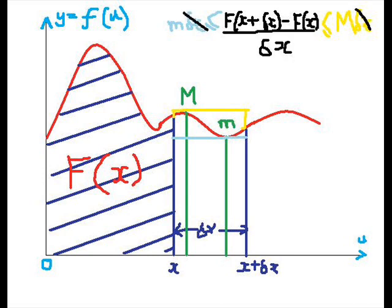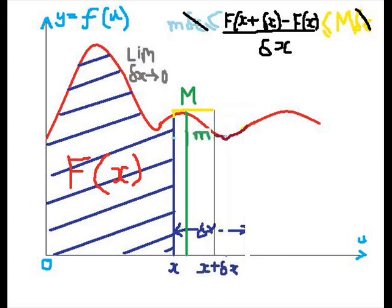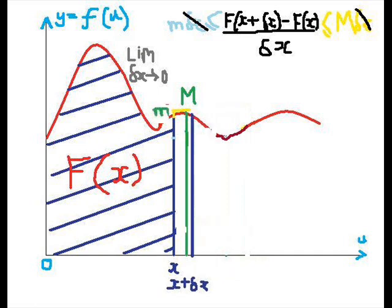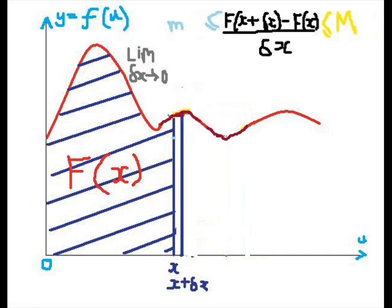In other words, the strip is going to get thinner and thinner. As the strip gets thinner, we say delta x is tending to zero now. As the strip gets thinner, look at what happens to the maximum and the minimum value of the curve in that thin strip. They get closer and closer to each other.